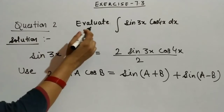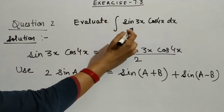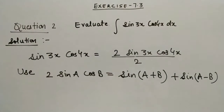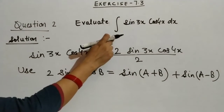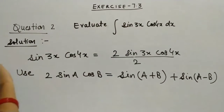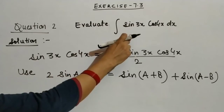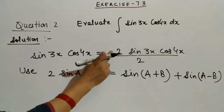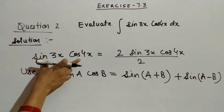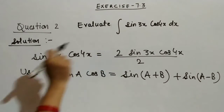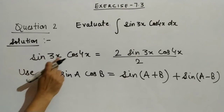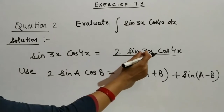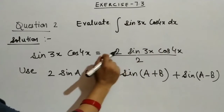Question number 2 is: evaluate integral of sin 3x into cos 4x with respect to x. For solving the integral of the given function, first we will simplify it. We multiply and divide the given function by 2, so sin 3x into cos 4x is equal to 2 sin 3x into cos 4x, divided by 2.